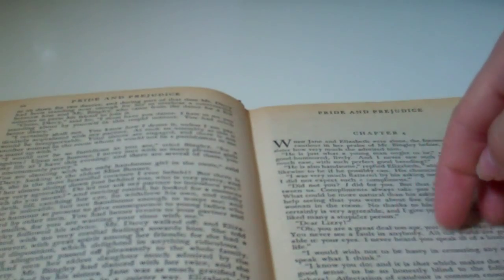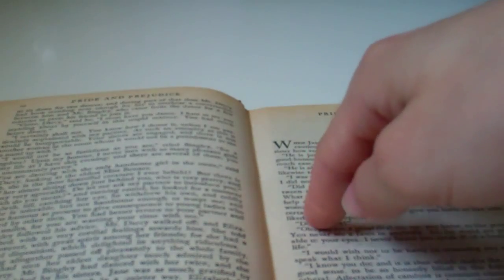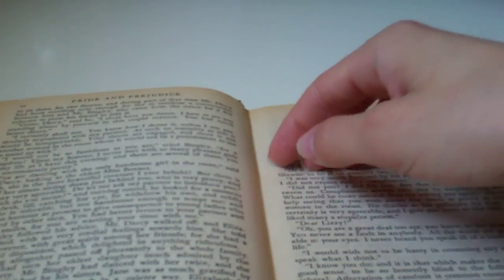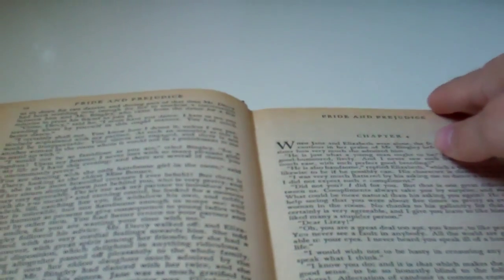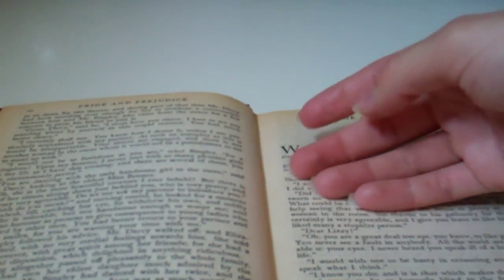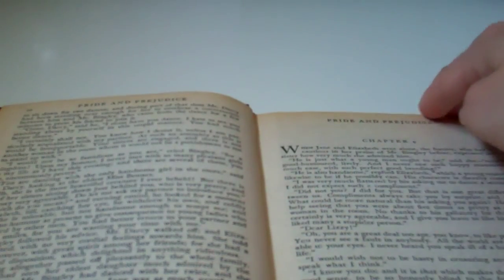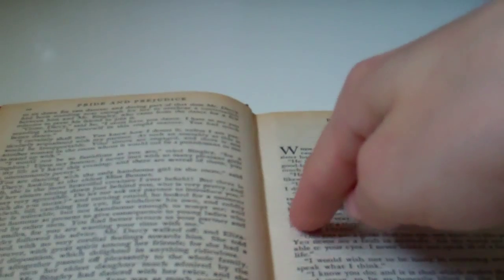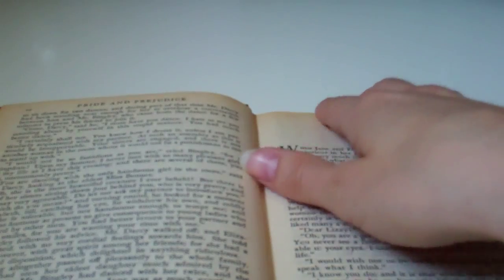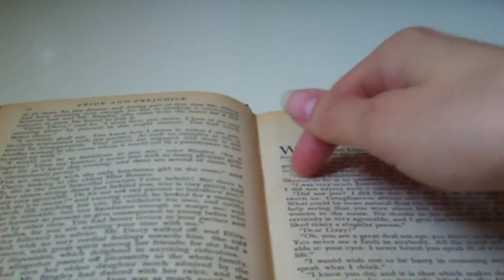You are dancing with the only handsome girl in the room, said Mr. Darcy, looking at the eldest Miss Bennet. Oh, she is the most beautiful creature I have ever beheld, but there is one of her sisters sitting down just behind you who is very pretty, and I dare say very agreeable. Do let me ask my partner to introduce you. Which do you mean? And turning round, he looked for a moment at Elizabeth, till catching her eye, he withdrew his own and coldly said, she is tolerable, but not handsome enough to tempt me.